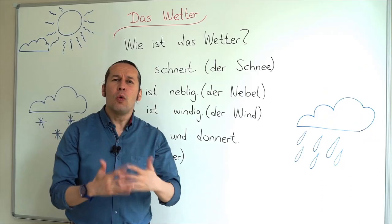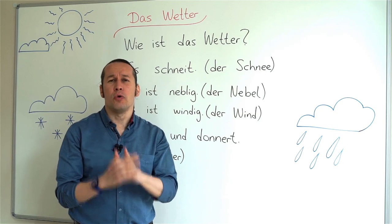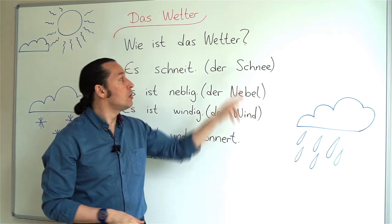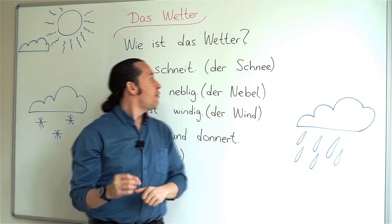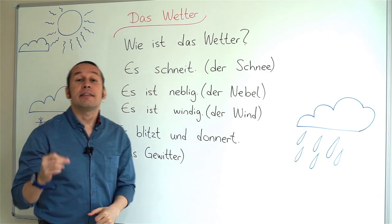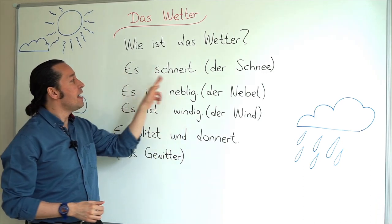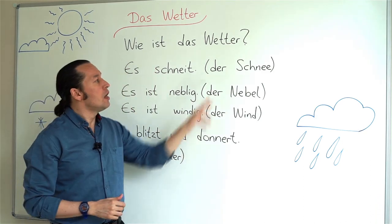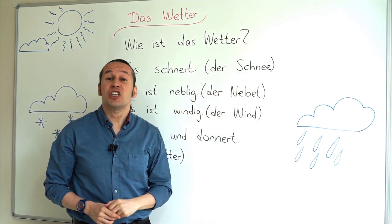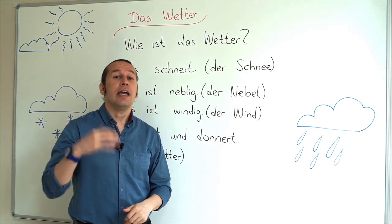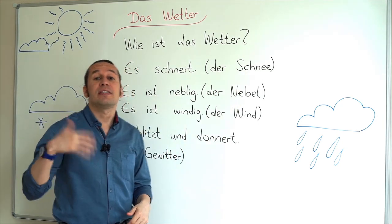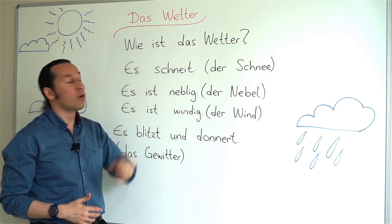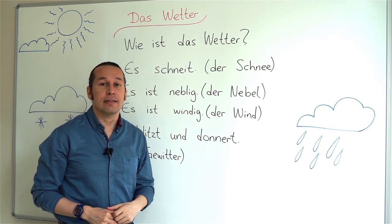So what is snow called in German? Snow is called 'Der Schnee.' If I say it is snowing, then I'll say 'Es schneit.' So snow is 'Der Schnee,' and it is snowing — or it snows — is 'Es schneit.'